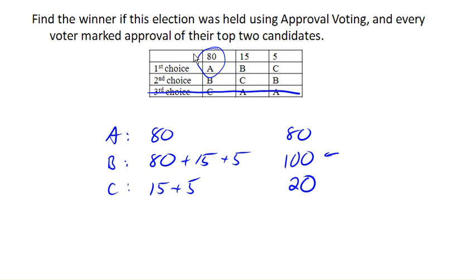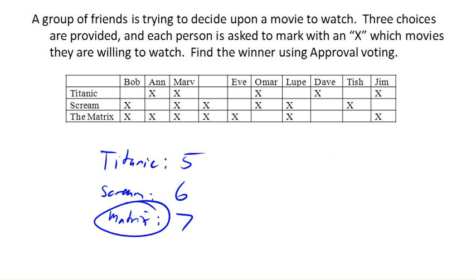It's also somewhat susceptible to strategic insincere voting, in which someone might not vote the way they truly feel in order to influence the results. For example, in our movie vote, suppose Bob and Alice would really much rather watch Scream. They're okay with watching The Matrix, but they'd much rather watch Scream. So they could insincerely vote by removing their approval for that option. If they did that, it would change the result of the election — voting against their true preferences in a way that influences the result.